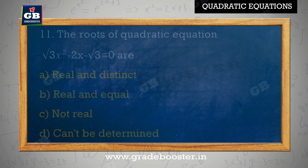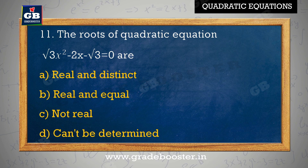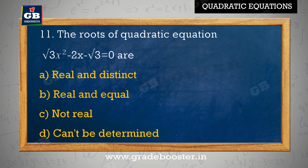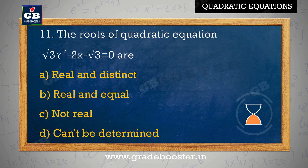The roots of the quadratic equation root 3 x square minus 2x minus root 3 equal to 0 are: A. real and distinct, B. real and equal, C. not real, D. can't be determined.